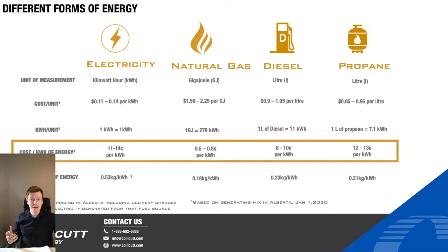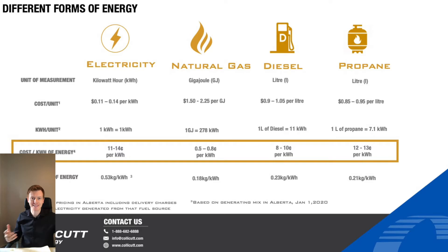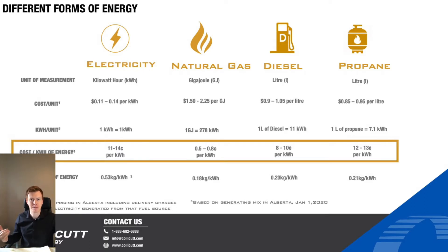Let's look at the cost of these different forms of energy. The first thing you'll notice is that electricity, diesel, and propane are relatively the same price — 8 to 14 cents a kilowatt hour, relatively similar. Now look at natural gas: natural gas is somewhere in the range of 0.5 to 0.8 cents a kilowatt hour. That is an entire order of magnitude less than the other forms of energy. It's incredibly cheap in comparison.